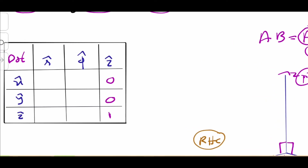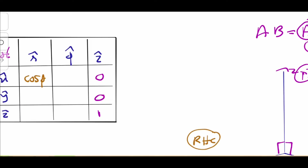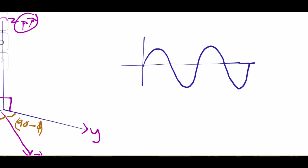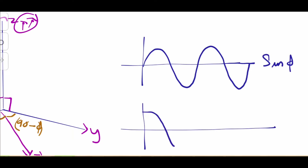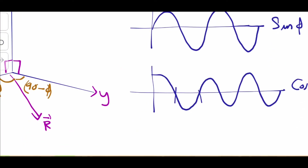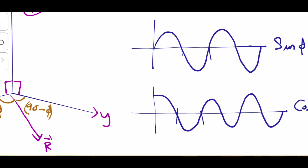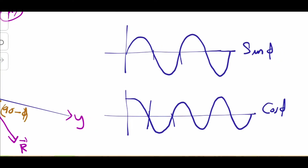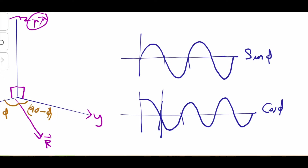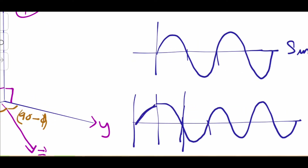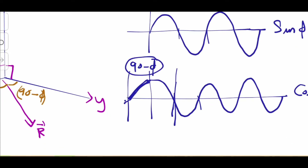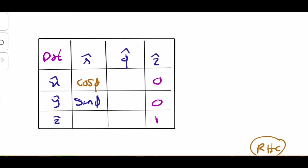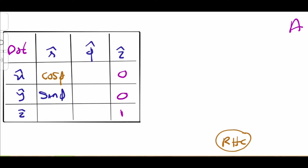So x̂·r̂ equals cos(phi). For ŷ·r̂, the angle between ŷ and r̂ is 90 minus phi, giving cos(90 − phi). Since a cosine function shifted by 90 degrees becomes a sine function, cos(90 − phi) equals sin(phi). So ŷ·r̂ equals sin(phi).